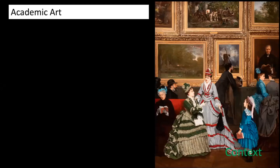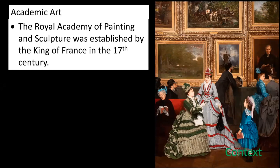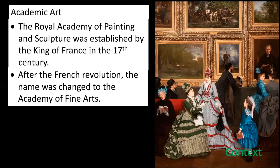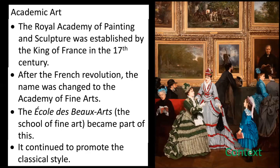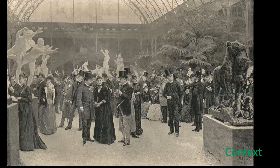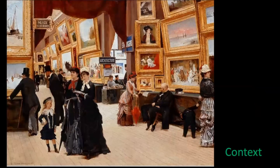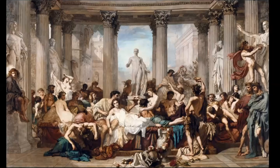So what was academic art? The Royal Academy of Painting and Sculpture was established by the King of France in the 17th century. After the French Revolution the name was changed to the Academy of Fine Arts; the École des Beaux-Arts, the School of Fine Art, became part of this. It continued to promote the classical style. Every year a huge exhibition in Paris — the Salon — was held. A jury of academicians chose safe works with a high moral content, and people flocked to see the kind of paintings they expected to see, with no interest in anything shocking.